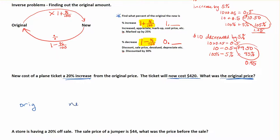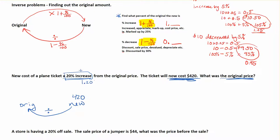We're going from the new to the original, so we divide. We have the new price — $420 — and we need to figure out whether I'm doing 1 plus or 1 minus. A 20% increase means 1 plus: at 100%, increasing by 20% gets you to 120%, and the decimal is 1.2. So if we divide by 1.2, we'll get the original amount. 420 divided by 1.2 gives $350.